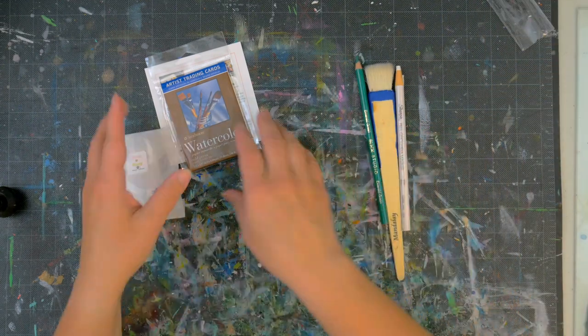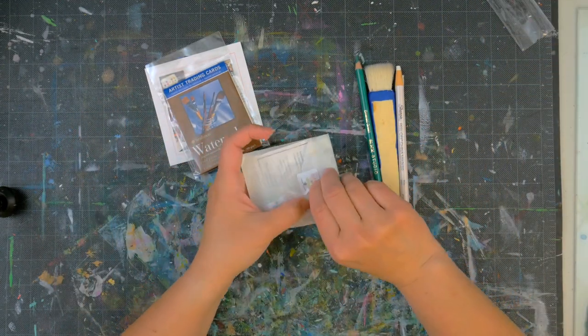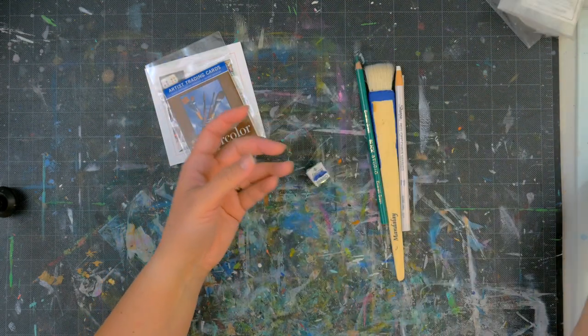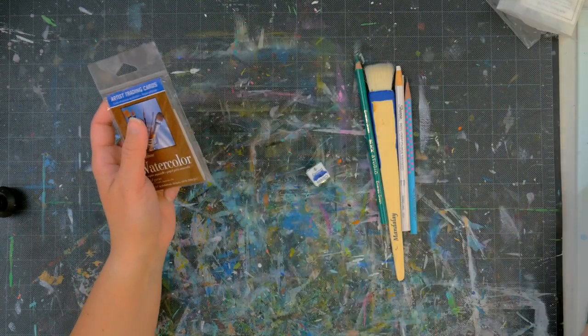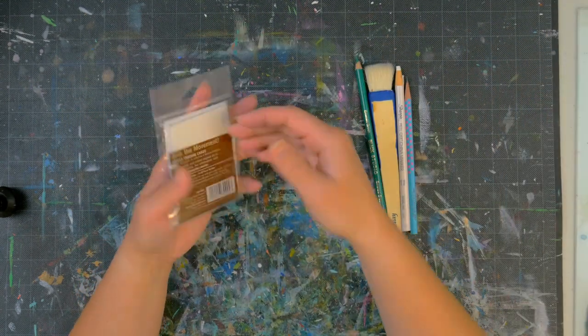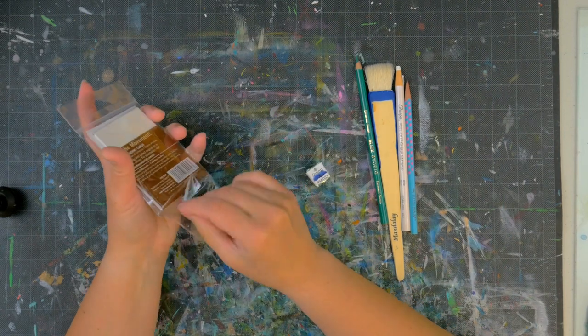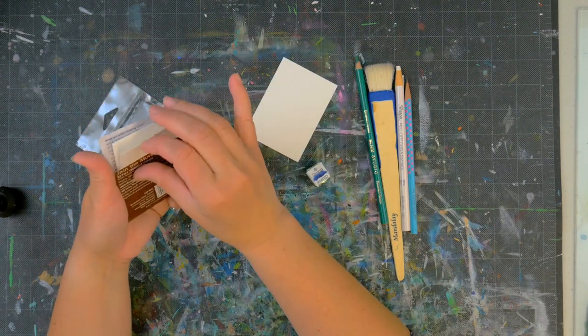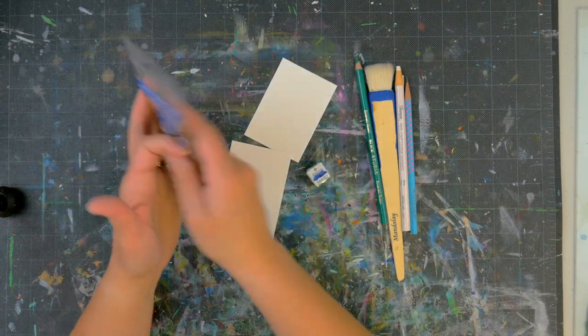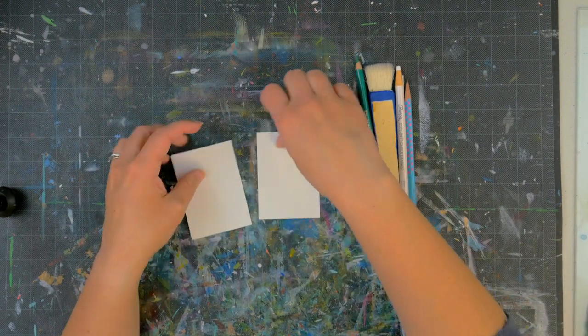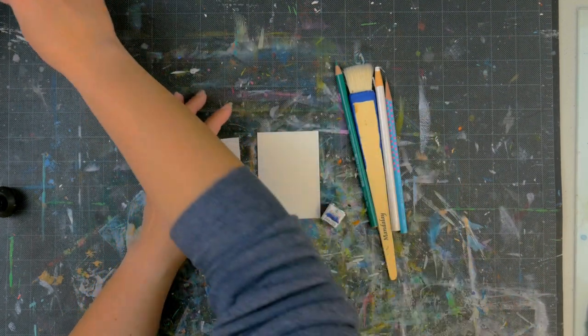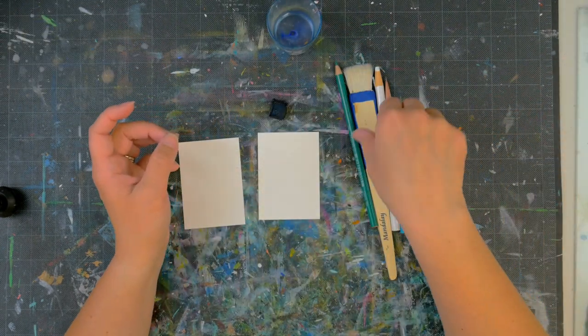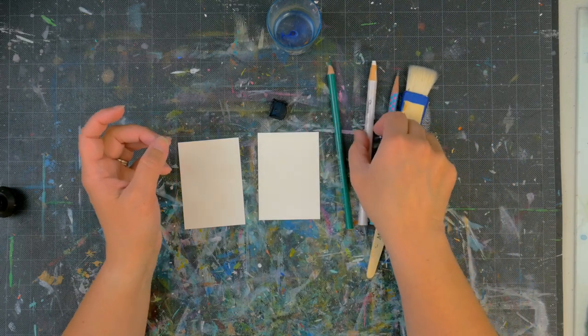We're gonna use it with an artist trading card. We're gonna use these supplies from the box: this watercolor and then just a pencil. We're gonna do two at the same time just so you can see variation. So you're gonna need these supplies from the box, a pencil, and just some water.